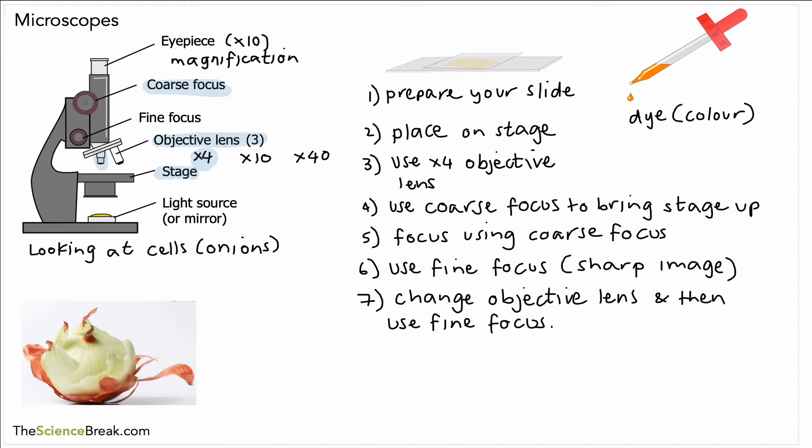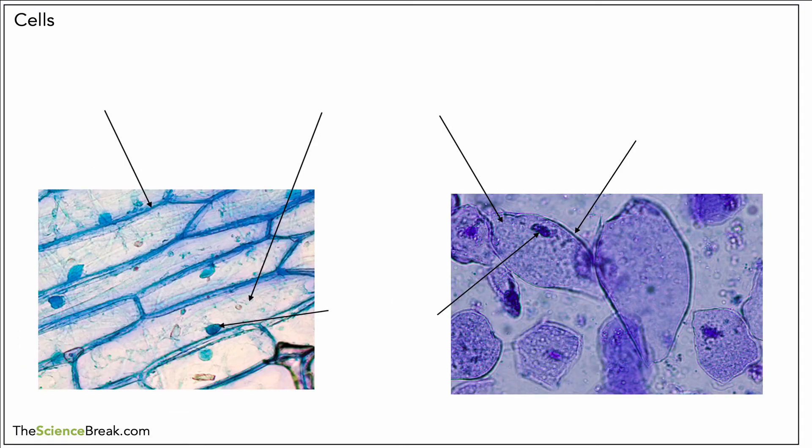Here we have two sets of cells. On the left hand side these are onion cells and we're looking at these using high power, the high power objective, in other words the one with the most magnification. Over here we've got some cheek cells and these come from the inside of the cheek. They're quite easy to set up as well.